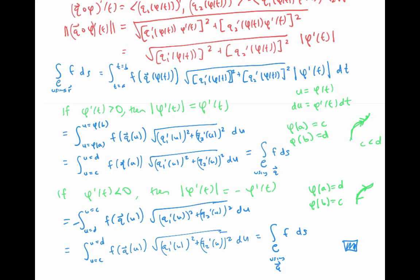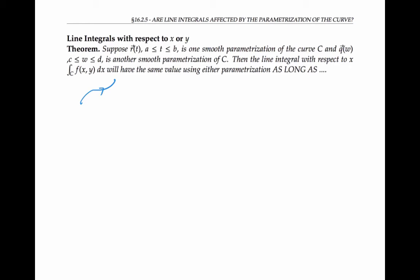The parameterization does not affect the value of the line integral with respect to arc length, even if we go in opposite directions — as long as we integrate from a smaller bound to a larger bound, our integrals with respect to arc length will always come out the same no matter what the parameterization. Next, let's look at line integrals with respect to x or y. The situation is very similar, except now if our two parameterizations go in opposite directions, our line integrals will be the negatives of each other.